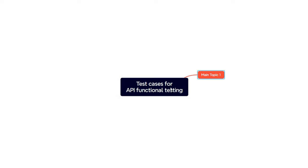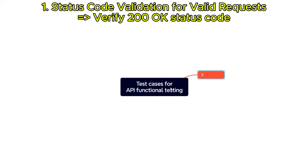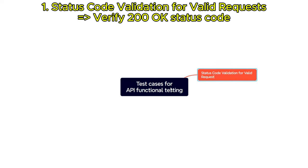The first test case for API functional testing is status code validation for valid requests. Verify that the API consistently returns the expected response status code, such as 200 OK, for valid and properly formatted requests.